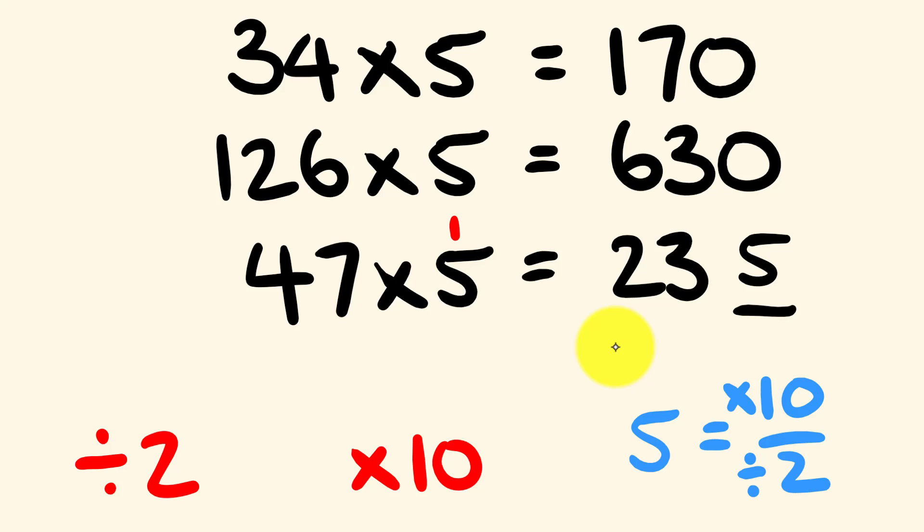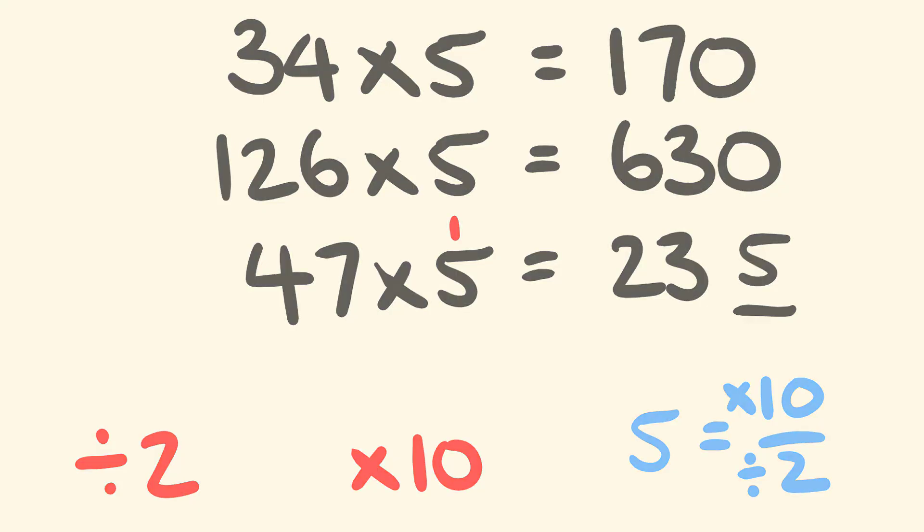Pretty simple — divide by 2, multiply by 10, and add that 5 on if you have a remainder. Now I'm going to show you how to multiply by 25.